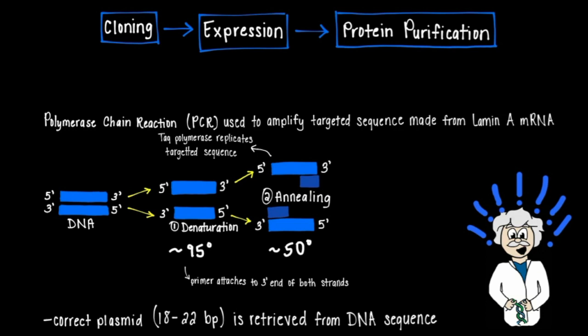For annealing to occur, the solution must be cooled so the DNA can undergo replication. After the targeted sequence is replicated, the process is repeated, generating DNA segments in the several orders of magnitude.